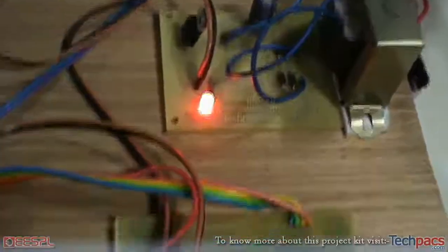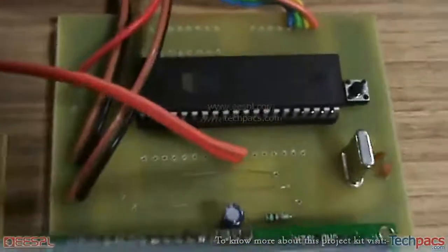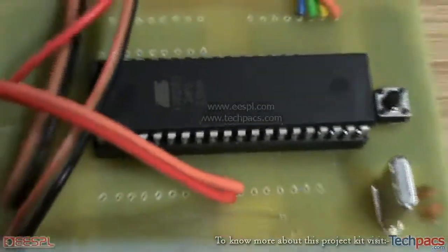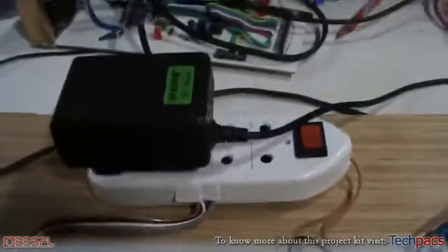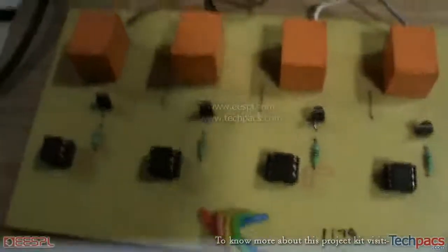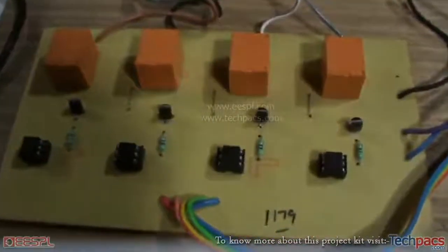From this regulated power supply, all the modules like the microcontroller board, the LCD, and here we have a driver circuit for the device. As we have to operate the 220 volt appliances from this project, we have connected a 4 relay control board.